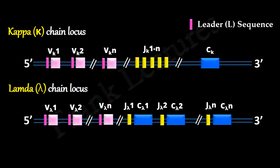Today we will find out how VDJ recombination takes place in light chain loci. Recall that the light chain loci is made up of V gene segments, J gene segments, and C genes.